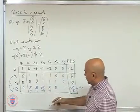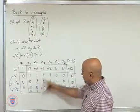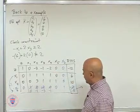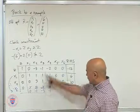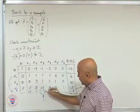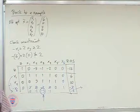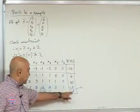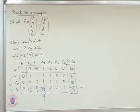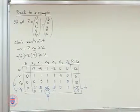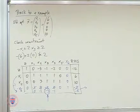Apply the dual simplex ratio test: minus 3 over minus 1, minus 1 over minus 3, minus 2 over minus 1. The smallest in absolute value is minus 1 over minus 3. So pivot on minus 3. That should remove the infeasibility. It may or may not be an optimum tableau — it depends on the row 0 numbers. That's it for sensitivity analysis; we'll talk about parametric analysis now.